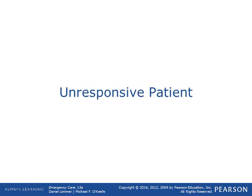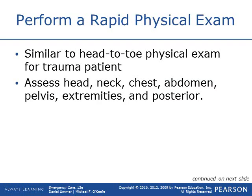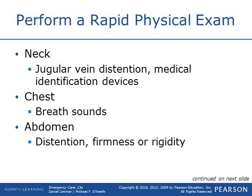Assessing the unresponsive patient — someone who can't answer any questions — requires putting on that CSI detective hat. Do a rapid physical exam head to toe: check the head, neck, chest, abdomen, pelvis, all extremities, and the back. At the neck, look for JVD and medical identification devices like necklaces.